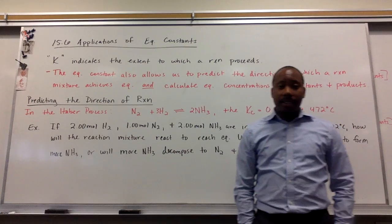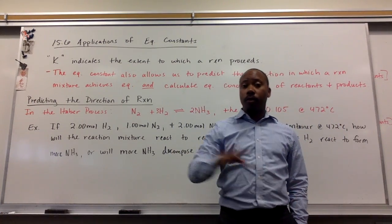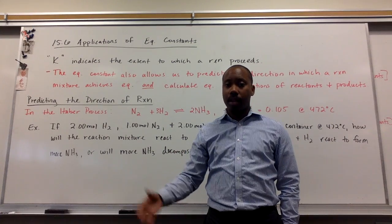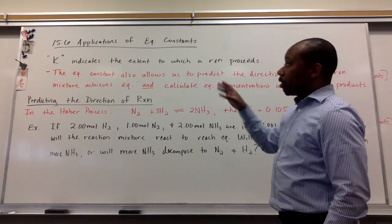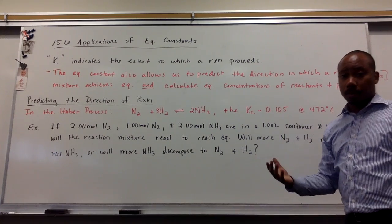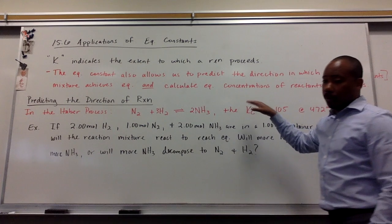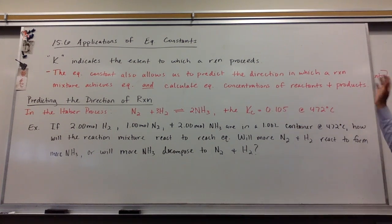K indicates the extent to which a reaction proceeds in a given direction, forward or in the reverse direction. Now, the equilibrium constant also allows us to predict the direction in which a reaction mixture achieves equilibrium and how to calculate the equilibrium concentrations of the reactants and the products.